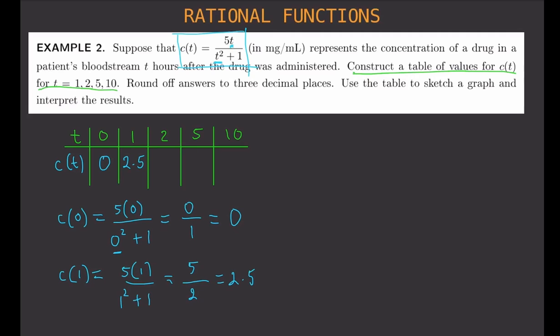How about when T equals 2? C of 2 is 5 times 2 over 2 squared plus 1. Wherever T appears, substitute 2. So that's 10 over 4 plus 1, which is 10 over 5, and that gives you 2. So C of 2 is 2.